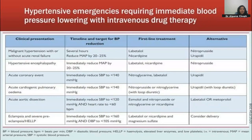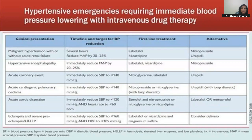Hypertensive emergency: BP more than 220/120 with evidence of target organ damage. Without organ damage, it is hypertensive urgency. With organ damage, it is hypertensive emergency. First-line treatment includes labetalol or nicardipine for hypertensive encephalopathy — immediately reduce BP. For acute coronary events, nitroglycerin is given. These require hospital-based management.